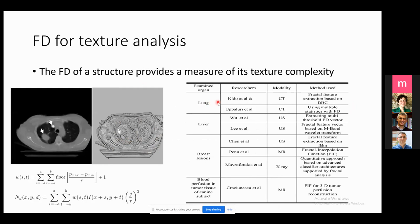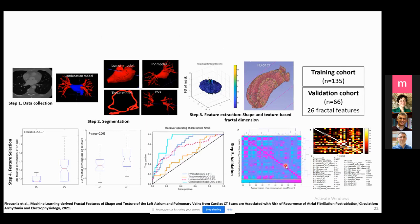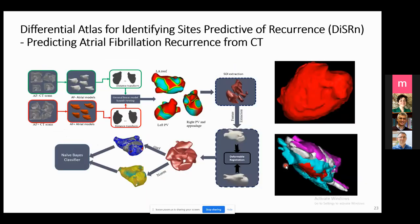Texture analysis in 2D or 3D can be applied for different medical imaging applications like lung, liver, and tumor tissue. In this paper, I tried to extract texture features from the myocardium wall of the left atrium. This is the fractal map comparing patients with AFib recurrence versus non-AFib recurrence. We added statistical analysis and compared fractal dimension with clinical characteristics to obtain correlations between them. This work was accepted in the Circulation journal.